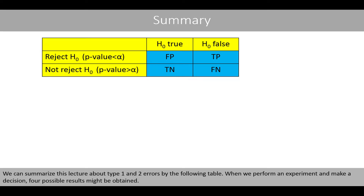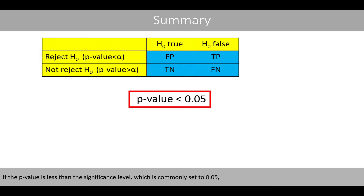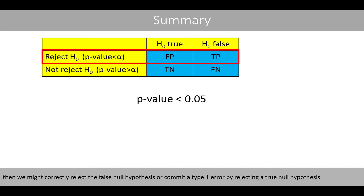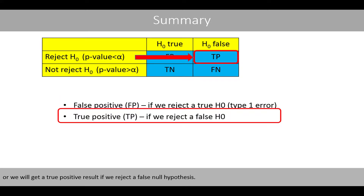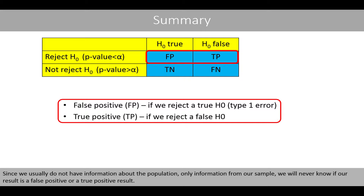We can summarize this lecture about type 1 and 2 errors with the following table. When we perform an experiment and make a decision, four possible results might be obtained. If the p-value is less than the significance level, commonly set to 0.05, we might correctly reject the false null hypothesis or commit a type 1 error by rejecting a true null hypothesis. We get a false positive result if we reject a true null hypothesis, which means we have committed a type 1 error, or a true positive result if we reject a false null hypothesis. Since we usually do not have information about the population — only information from our sample — we will never know if our result is a false positive or a true positive result.